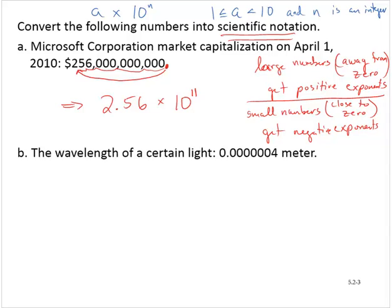All right. Let's look at exercise B where we're talking about the wavelength of a certain light. And we have 0.0000004 meter. And we want to get this to scientific notation.